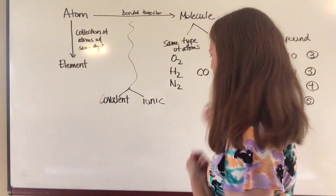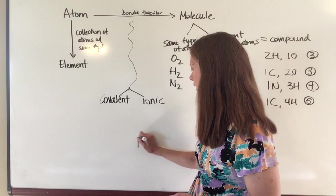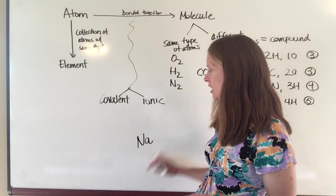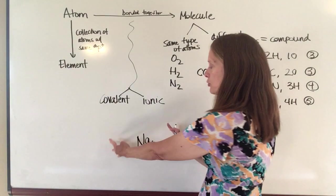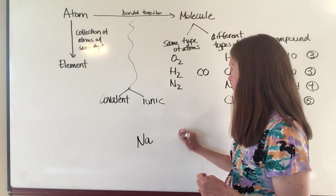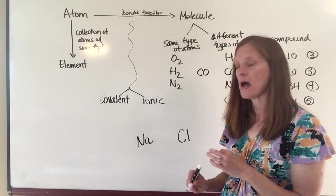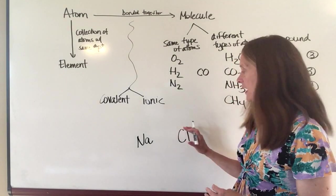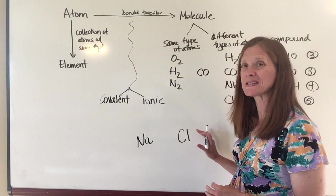And so to achieve that magic number of eight, they will do one of two things. They will either share some electrons with another atom so that they can get up to eight or they will actually transfer electrons back and forth. So as an example, a sodium ion has several different shells of electrons, but its outermost shell, it just has one electron. Chlorine on the other hand has several shells of electrons, but its outermost one has seven.